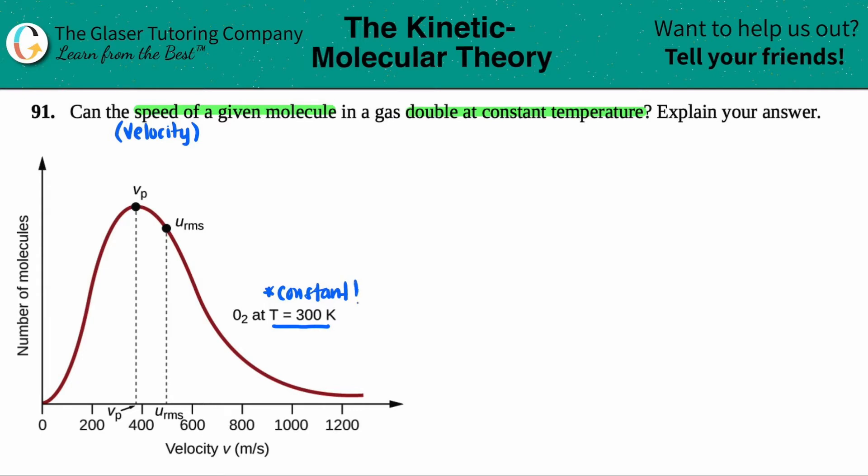And it looks like it's a depiction between the number of molecules of O2, whether you have one molecule, two molecules, two million molecules, etc., and their velocity. And remember, we can say that this is speed as well.